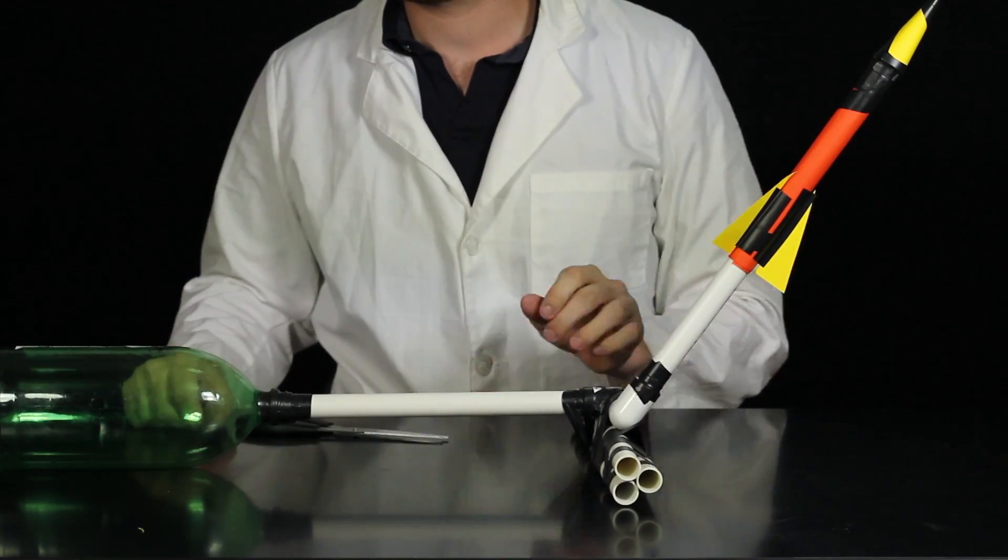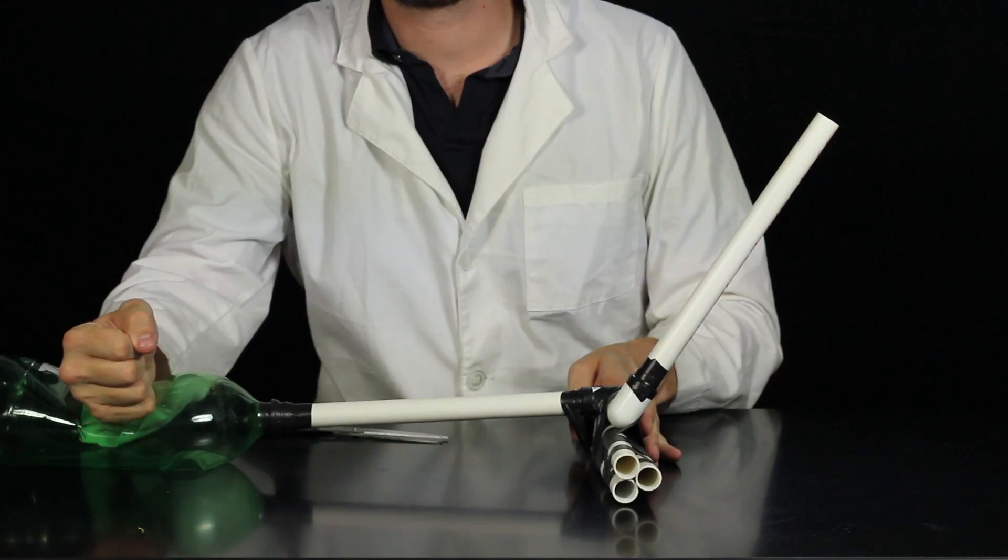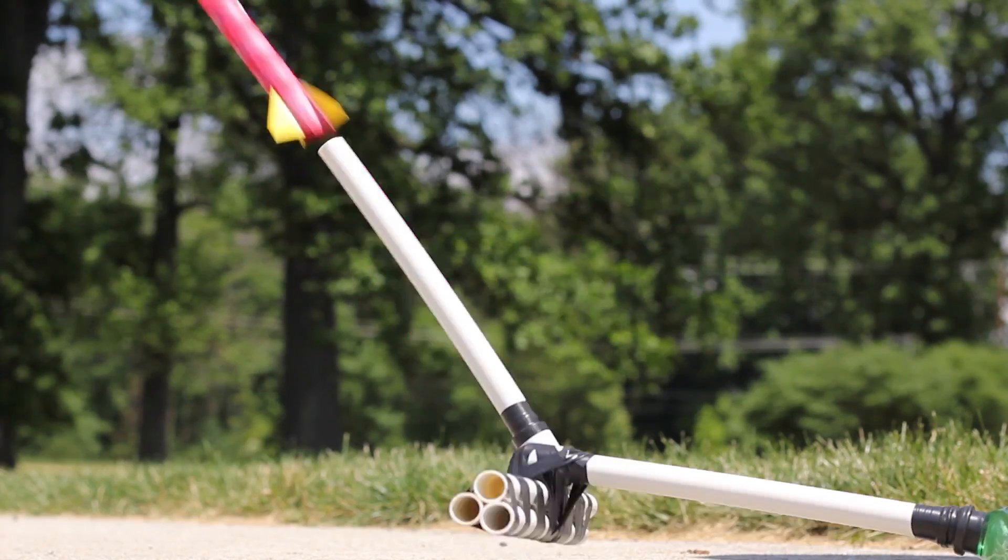To launch your rocket, all you need to do is smash the 2-liter bottle. The more pressure you can create in the bottle, the further your rocket will travel.